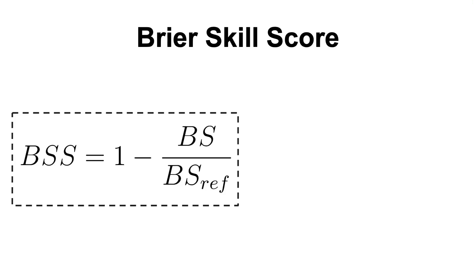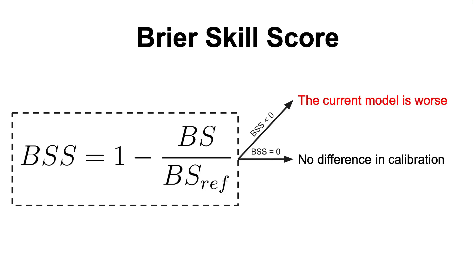If the Brier Skill Score is equal to 0, then it means there is no difference in calibration. If it is lower than 0, then it means that the current model is worse. And if it is greater than 0, then the current model is better. That was the video for today — I hope you enjoyed it. Please leave a like if you did, let me know your thoughts about this score in the comments below, and subscribe to be up to date with the new content on this channel.